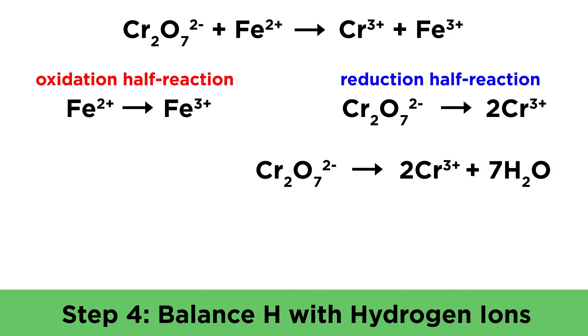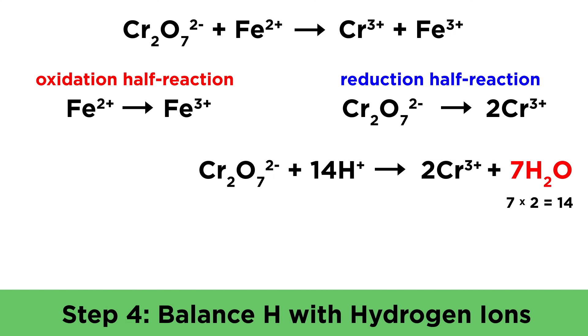Now we can balance hydrogen atoms by adding hydrogen ions. Since there are fourteen hydrogen atoms on the right from the seven water molecules, we will need fourteen hydrogen ions on the left. This means all of the elements are balanced.